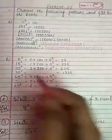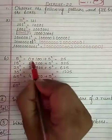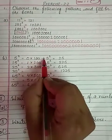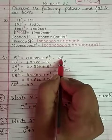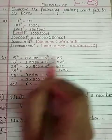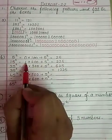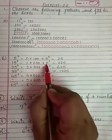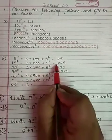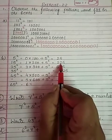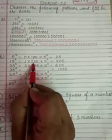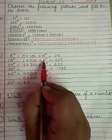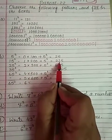Next new pattern: 5 square is equal to 0 into 100 plus 5 square, which equals 25. This is also a pattern. 15 square means 1 multiplied by 200 plus 5 square, equal to 225. That is: 1 into 200 = 200, plus 5 square 25, so 200 plus 25 = 225.